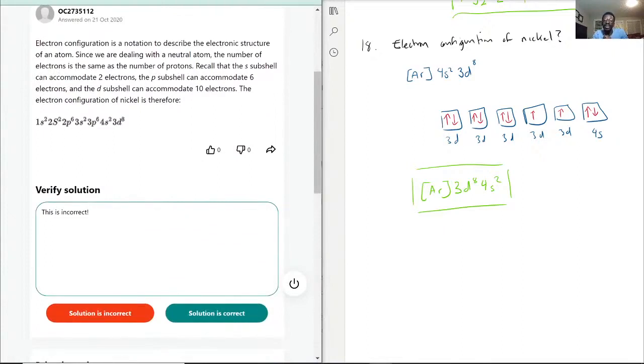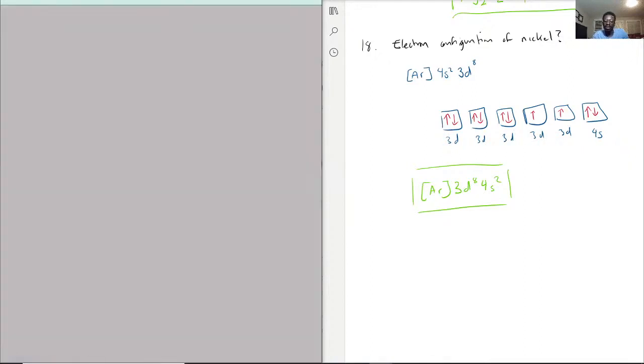This is definitely something they can put as one of the multiple choice answers where it looks so close to what you want, but it's not. You want 3d8 4s2. So yeah, that's something you got to watch.